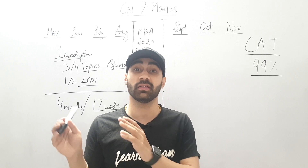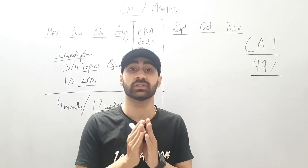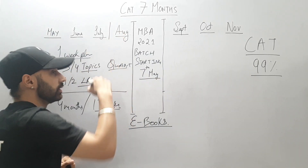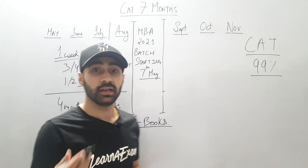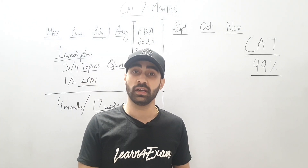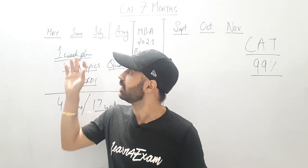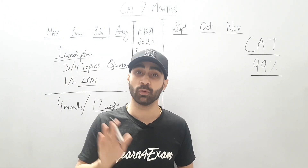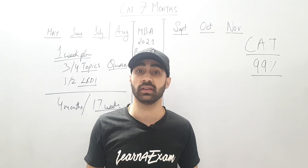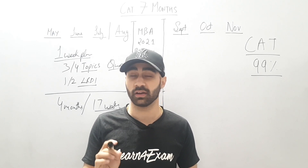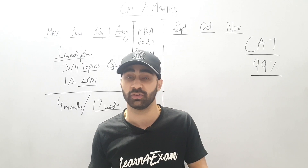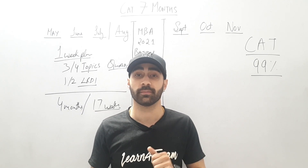But it's a long process. After three months, if you do daily RC, Para Jumbles, and reading, you will see that your verbal has improved. Before that you will not see much improvement — it will improve a little, but don't expect to see dramatic results right away.